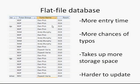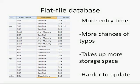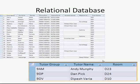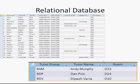Another problem with flat file databases is that if Dan Pick's room changed to D22, you'd have to go and change each individual record. A much better approach is to have a separate table that stores the detail about each tutor group. Then if Dan Pick's room does change, you only need to change it once.